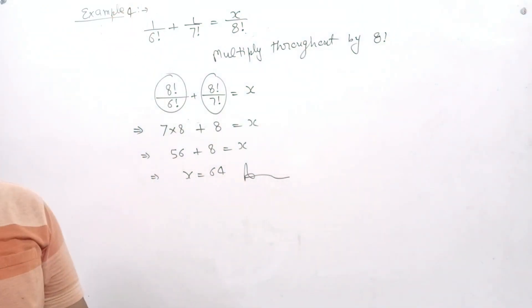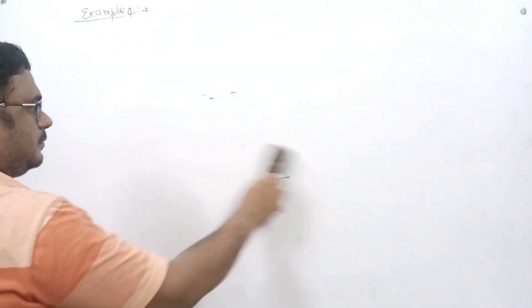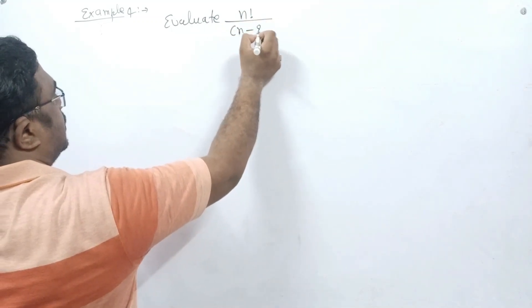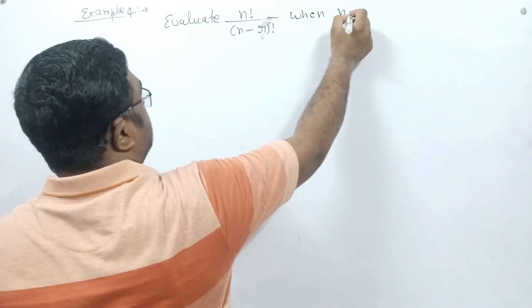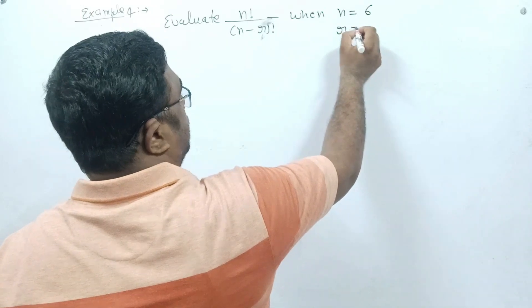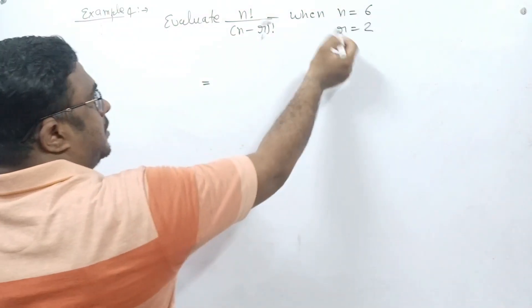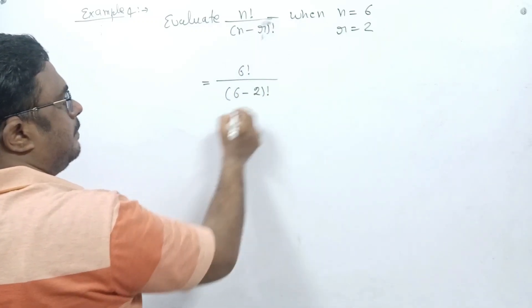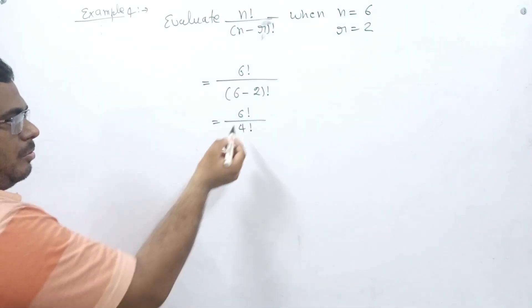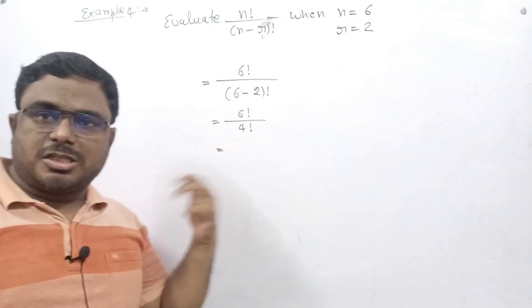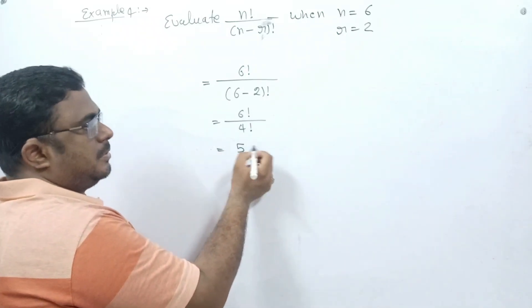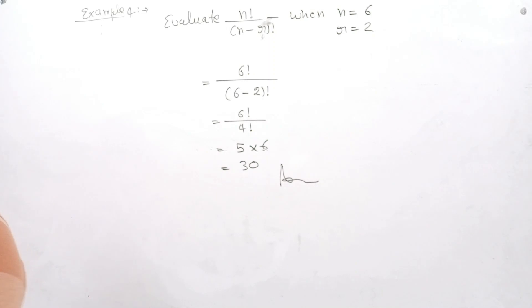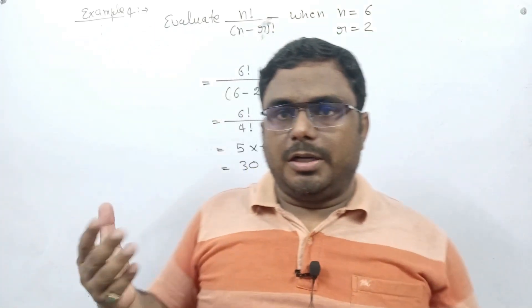Example 4: Evaluate n! / [(n−r)! × r!] when n = 6 and r = 2. Simply substitute the values: 6! / (4! × 2!). Divide 6! by 4! — since 4 is smaller, take the numbers just greater than 4 up to 6: that is 5 × 6 = 30. This is the result.